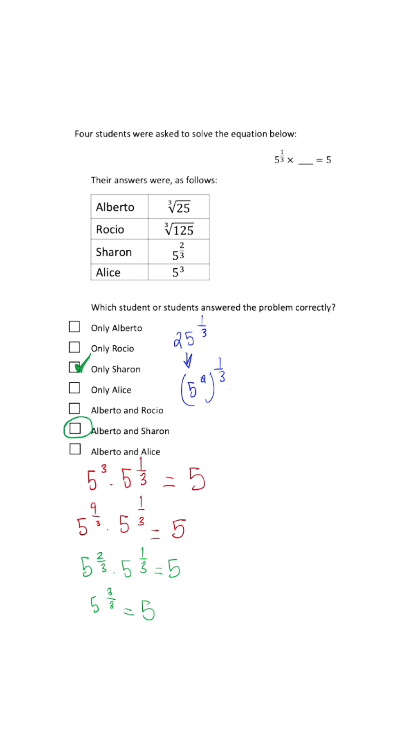When we simplify this further, we get 5 to the 2/3 power, meaning that once we multiply by 5 to the 1/3, we'll get 5 to the 3 over 3 power, which is the same as just 5.